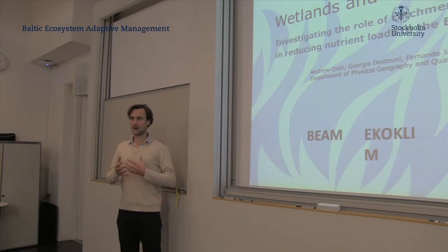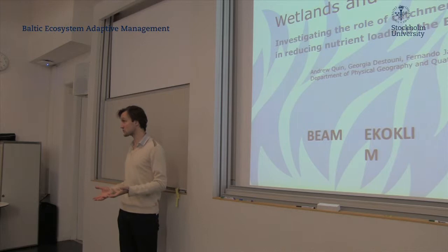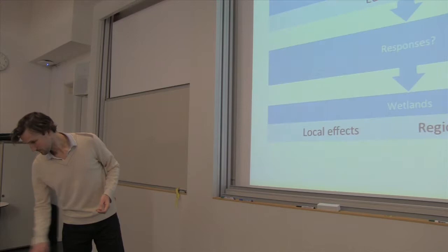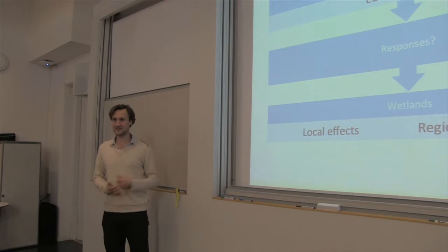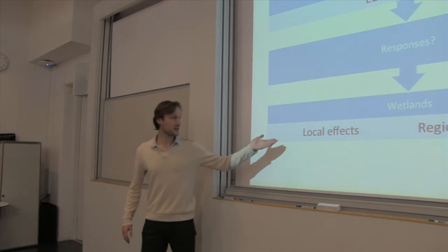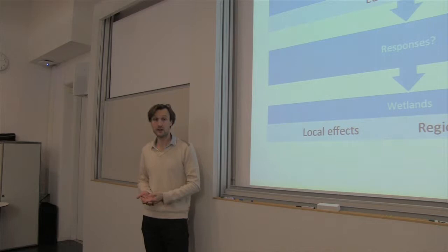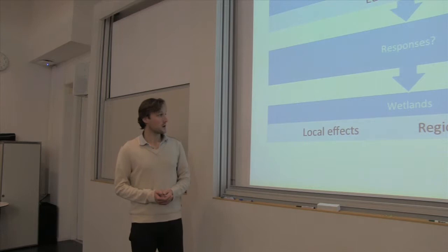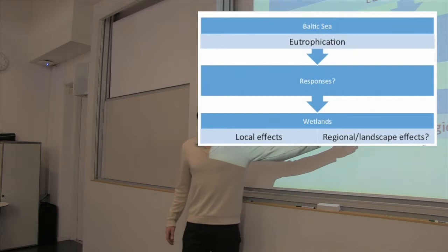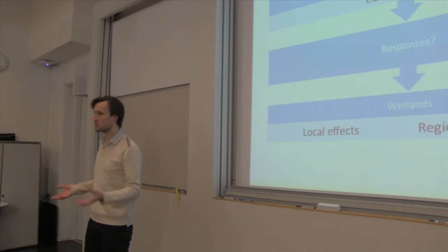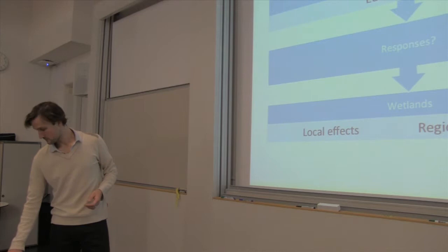What we were looking at here is: at a catchment scale, do wetlands play a role in reducing nutrients — nutrient loading to the vortex? There is evidence; articles are published on local effects showing that wetlands have local effects and they remove a certain amount of nutrients from water flow to the sea. But what about wetlands' regional or landscape effects? If you have more wetlands in the landscape, does that lead to more nutrient retention? That's the question we're looking at.